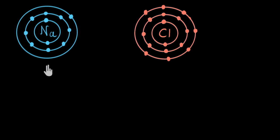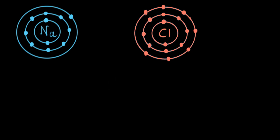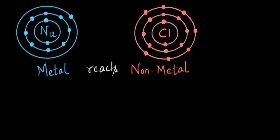When sodium reacts with chlorine we get sodium chloride or NaCl. But how are things happening at an atomic level? That's exactly what we are going to find out in this video. We will learn how metals react with non-metals and what ionic bonds are and how they are formed.